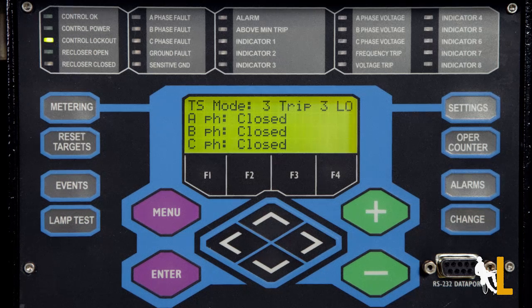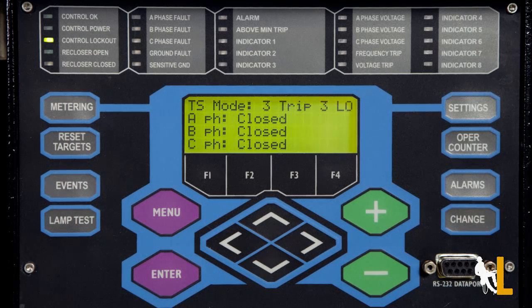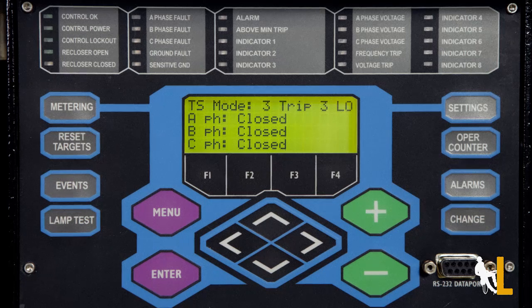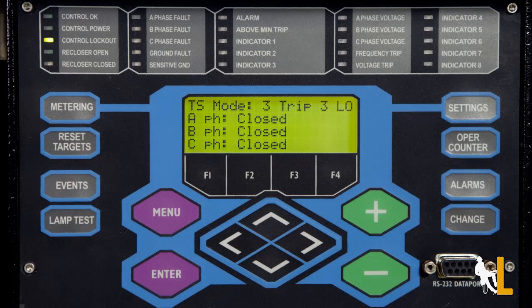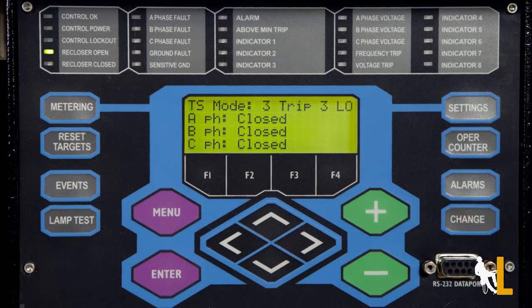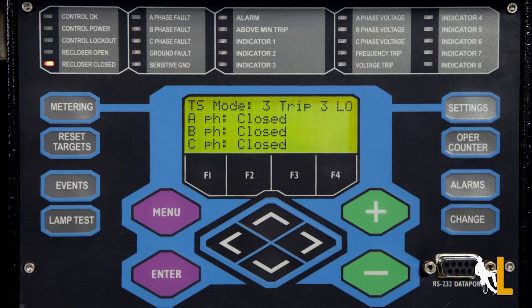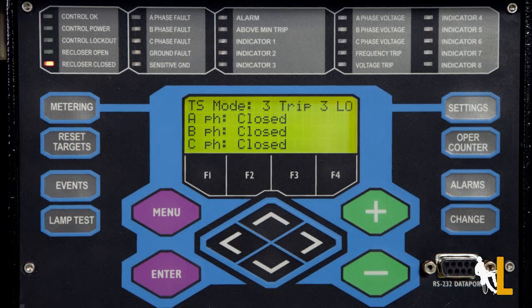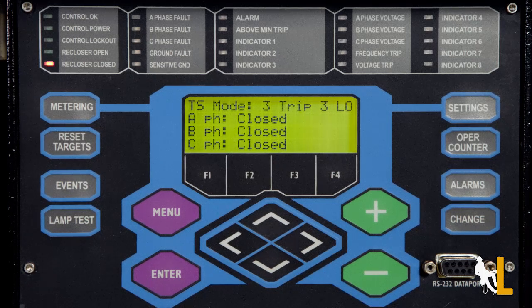If the control lockout is steady green, the control for all three phases is locked out. And if it is blinking, only one or two of them are locked out. Same with the recloser open and closed. A steady light indicates that all phases are open or closed, and a blinking light means only one or two of them are.